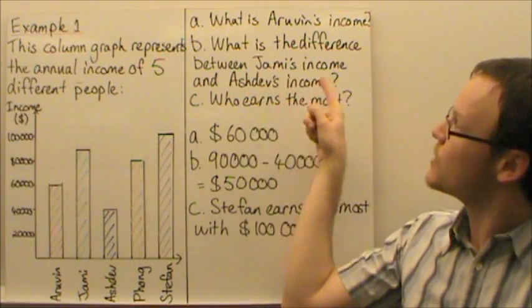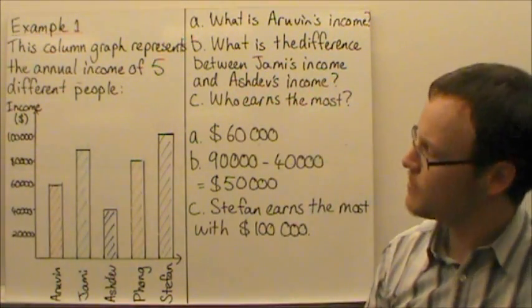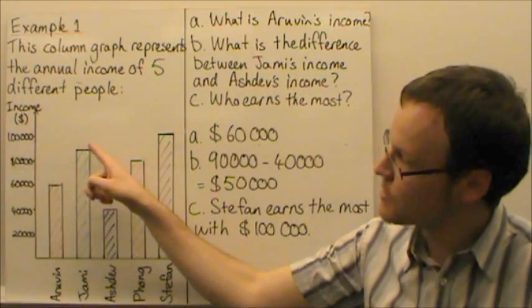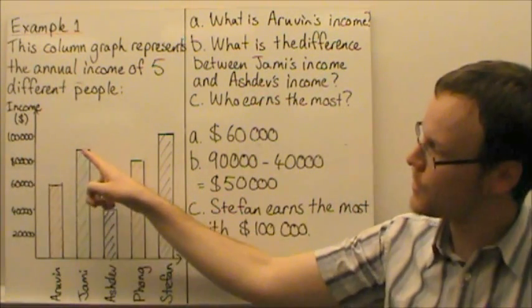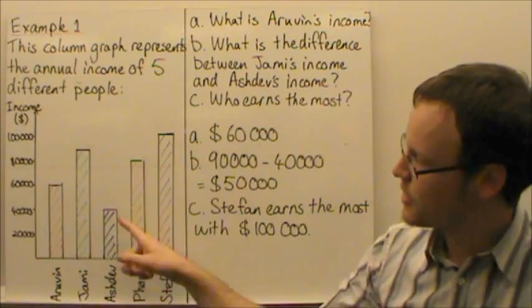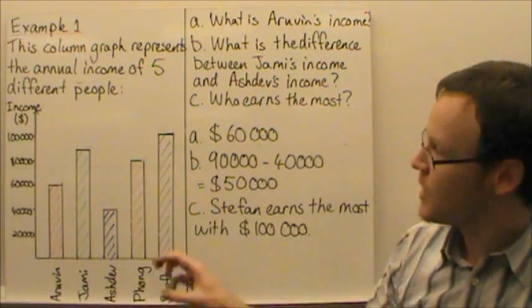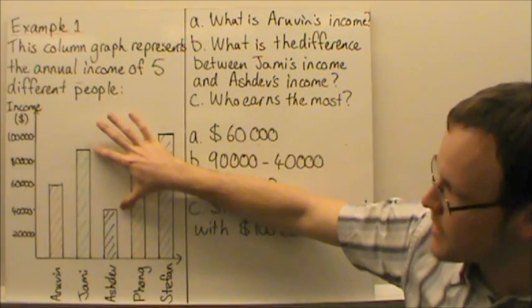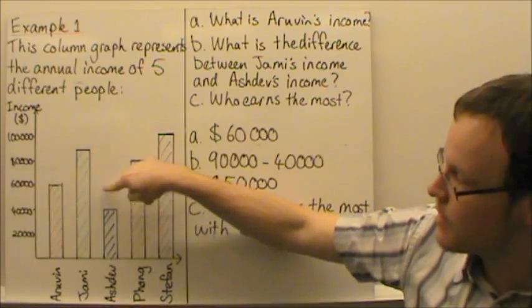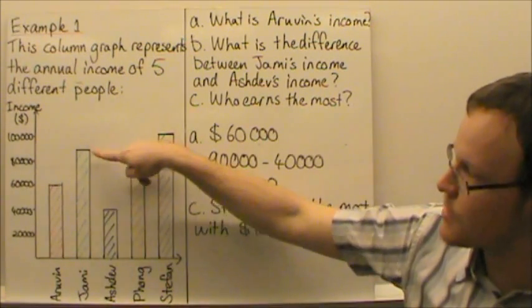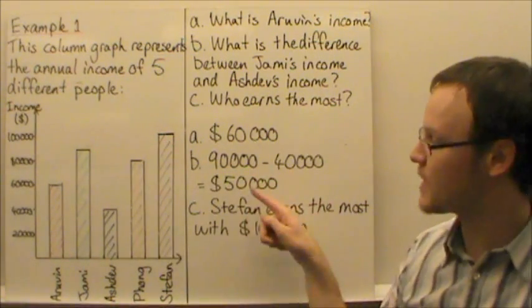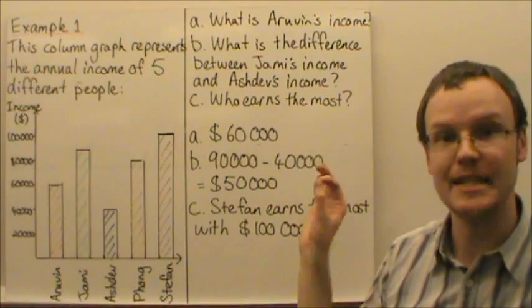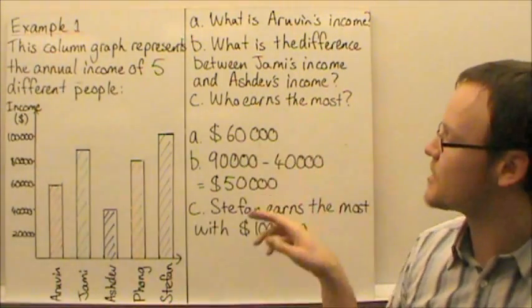What is the difference between Jamie's income and AshDev's income? Jamie's income is $90,000 in between $80,000 and $100,000 here. And AshDev's income is $40,000, so the difference is going to be this amount here. If we subtract this amount, $40,000 away from $90,000, then we get $50,000 is the difference between Jamie's and AshDev's income.